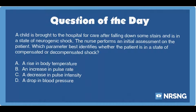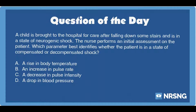A child is brought to the hospital for care after falling down some stairs and is in a state of neurogenic shock. The nurse performs an initial assessment on the patient. Which parameter best identifies whether the patient is in a state of compensated or decompensated shock? A, a rise in body temperature. B, an increase in pulse rate. C, a decrease in pulse intensity. D, a drop in blood pressure.